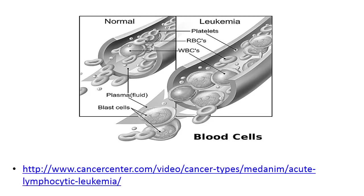Blood cells in a leukemia patient look very different from those of a normal patient. In the normal picture we have normal plasma fluid with normal white blood cells, red blood cells, and platelets. In a leukemia patient, the blast cells are very large and interfere with the normal movement of white blood cells, red blood cells, and platelets through the blood system.